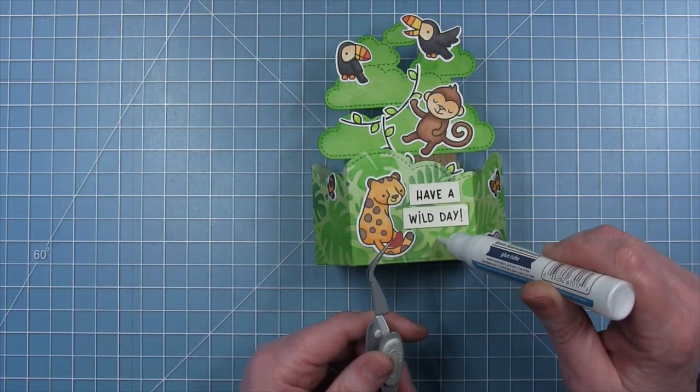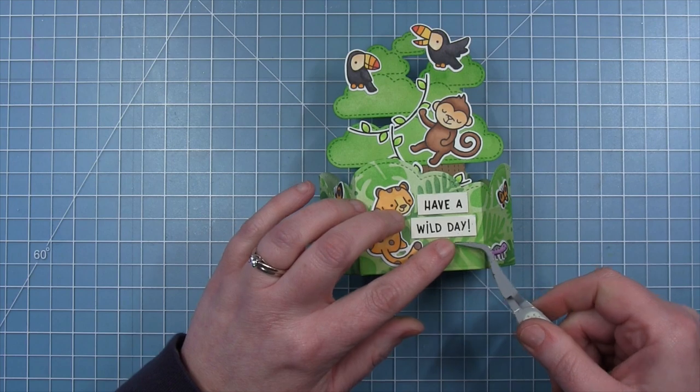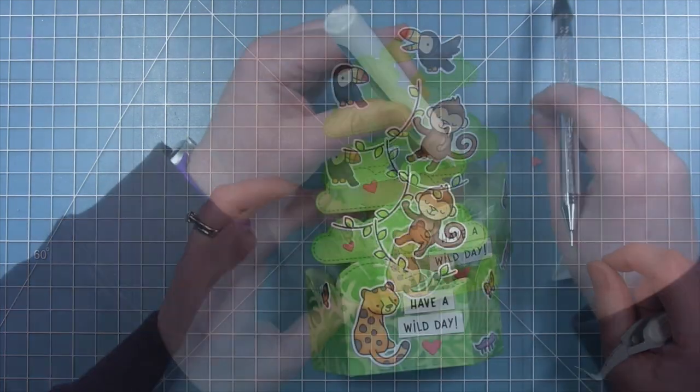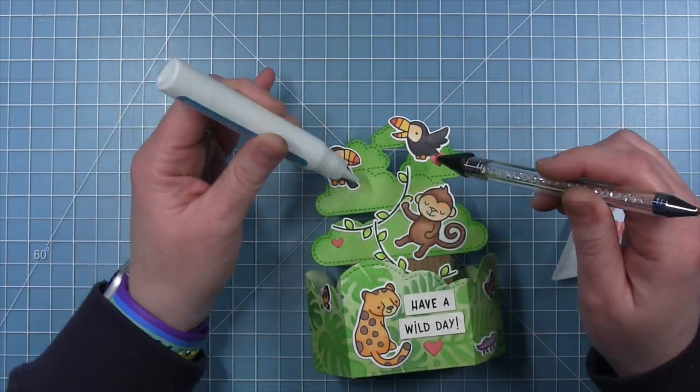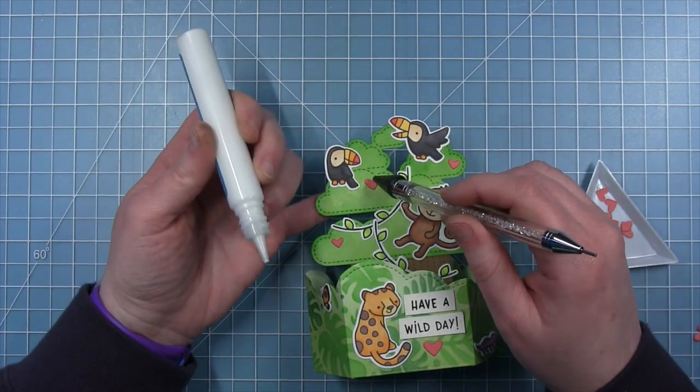And then to add a little embellishment, I have some Guava cardstock hearts cut from the Hearts and Stars with Skinny Tag die that I just keep on hand. They're the perfect little embellishments.